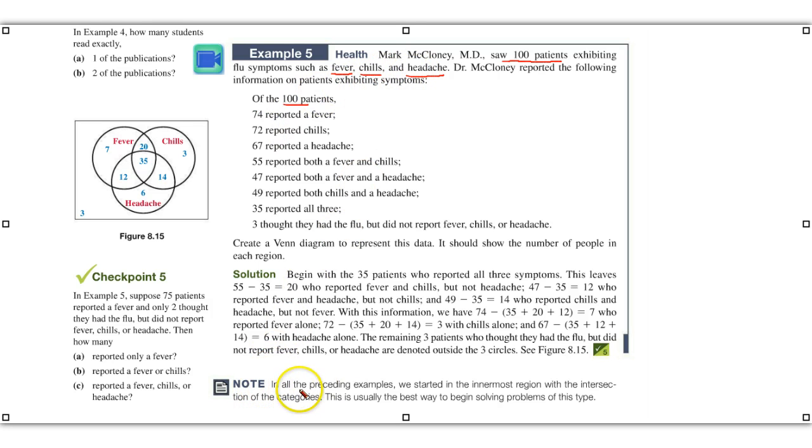And then what you want to do, and I think this note down here is significant. In all the preceding examples, you should start with the innermost region, with the intersections of the categories. That would be here where they're showing 35. And then you start working out, taking those and then subtracting. And here they're going through the details of it, similar to what we've done already. But for something like this, you need just to sit down. And now you see the protocol for solving it. We're going to let you work it. And then when you add all of these up, and subtract it from one hundred, you find that there were three.